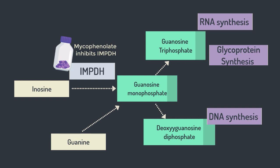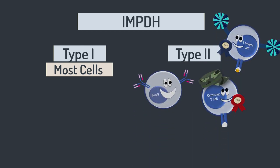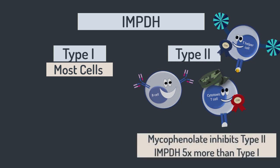Something special about mycophenolate is how it preferentially inhibits lymphocytes compared to other cells in the body. The reason is that there are two different isoforms of IMPDH: type 1 and type 2. Type 1 is present in most cells in the body, whilst type 2 is predominantly present in lymphocytes. Mycophenolate is five times more potent at inhibiting the type 2 isoform compared to type 1. So mycophenolate's inhibition of activated lymphocytes happens for two reasons: one, these cells rely on proliferation which mycophenolate reduces; and two, lymphocytes rely on the type 2 isoform of IMPDH, which mycophenolate preferentially blocks.